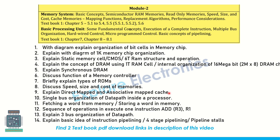Question 9: explain direct-mapped and associative-mapped cache. Question 10: single bus organization and data path inside a processor. Question 11: fetching a word from memory or storing a word in memory. Also, the sequence of operations to execute one instruction — ADD R3, R1 — this question is also in the other model question paper for CO, as it has steps involved in executing ADD R3, R1.